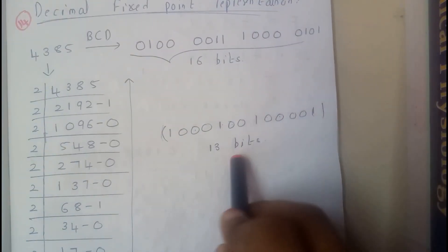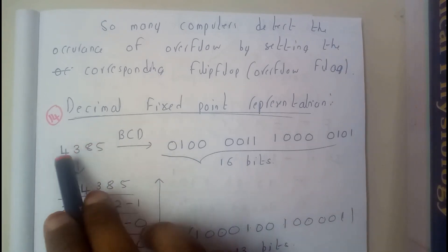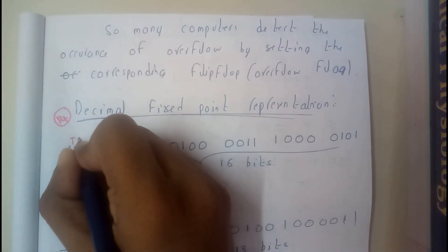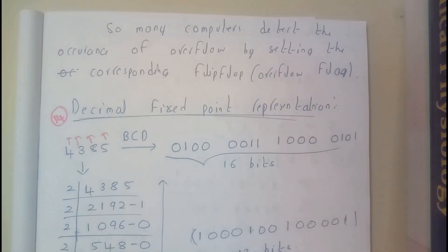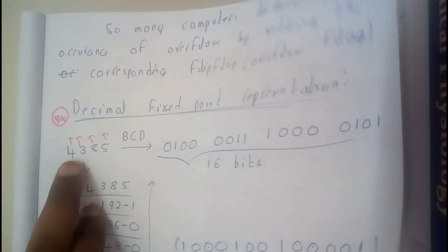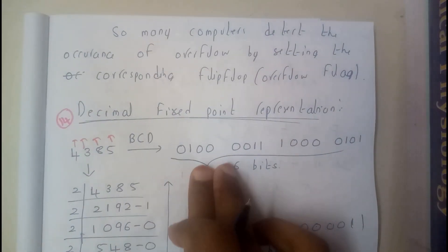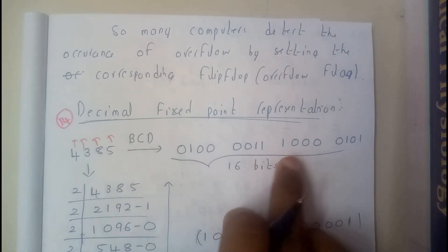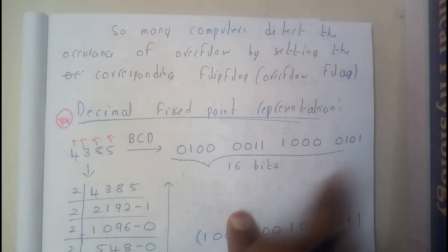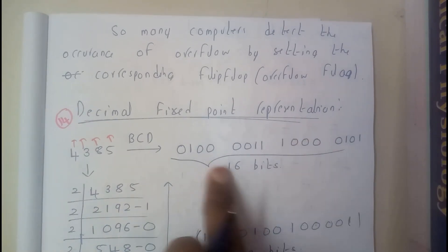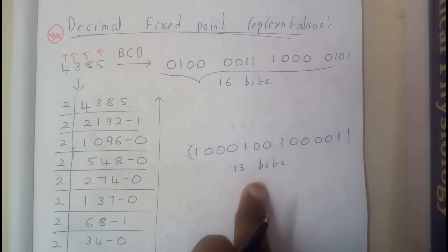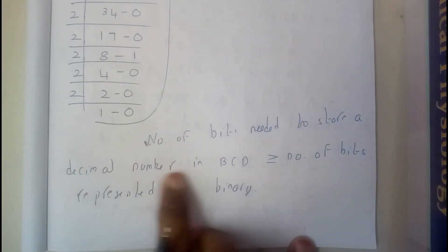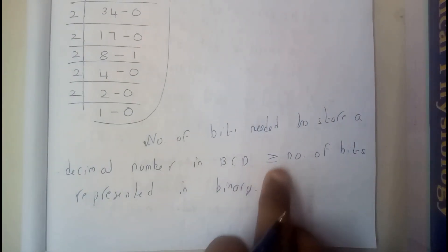Now when I try to represent 4385 in BCD, each decimal digit is represented using 4 bits. So 4 is represented as 0100, 3 as 0011, 8 as 1000, and 5 as 0101. That gives us 16 bits total. So we have 16 bits in BCD versus 13 bits in binary.